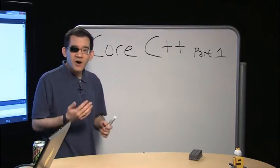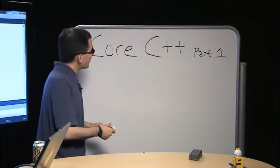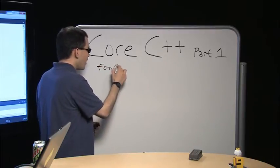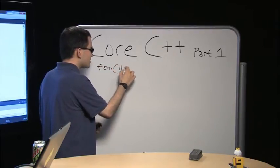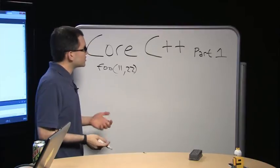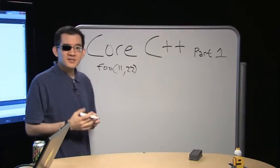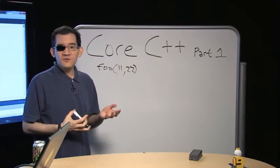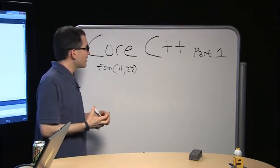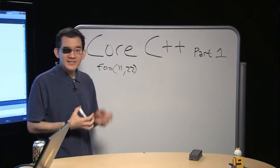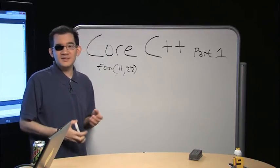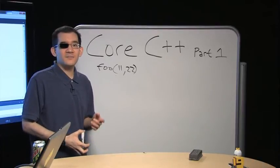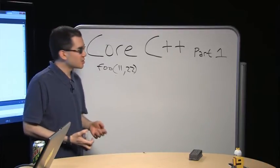What happens when you call a function in C++? If I just say something like foo of 11.22, what happens? Well, the compiler needs to know a lot of things — it needs to know which foo you want. This is also true in C, but in C++ it's so much more expressive, and that means there's a lot more going on in the core language.